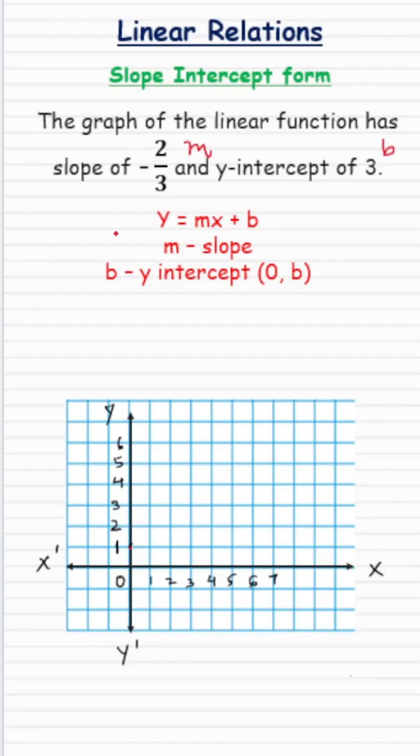Let's put in the values in this formula of y equals mx plus b, and our linear function comes out to be y equals negative 2 over 3 x plus 3. So that's the equation of our linear function.